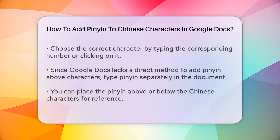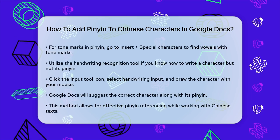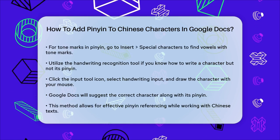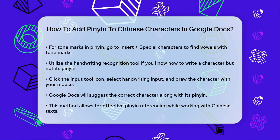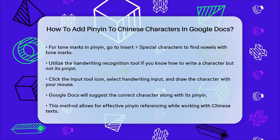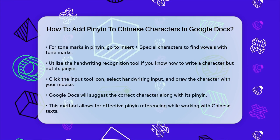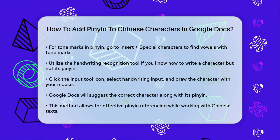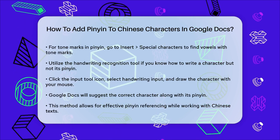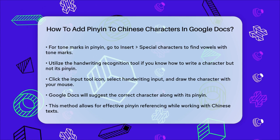Another useful feature is the Handwriting Recognition Tool. If you know how to write a character but not its pinyin, you can use this tool. Click on the Input Tool icon, select the Handwriting Input option, and draw the character with your mouse. Google Docs will suggest the correct character and its pinyin.